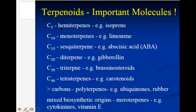Terpenoids can be classified into several groups. Hemiterpenes contain only one isoprene unit — C5 — so the compound contains only five carbons. Monoterpenes, for example limonene, contain two isoprene units, giving a total of 10 carbons. Sesquiterpenes have 15 carbons — like abscisic acid, which is a plant hormone, so it is also a Terpenoidal compound. Diterpenes contain 20 carbons.